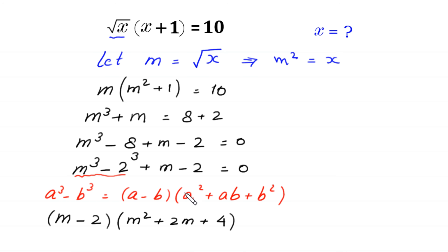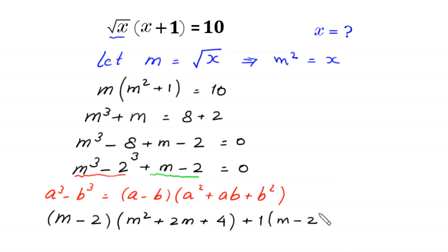And from these two terms, plus m minus 2, we can factor out plus 1 as a common factor, and in bracket left m minus 2, is equal to 0.